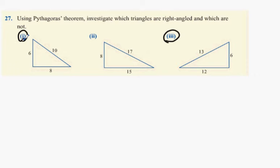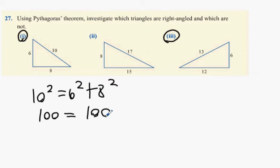Take 27, part 1. The longest side is 10 squared. It equals 6 squared plus 8 squared. 100 will actually end up to be equal to 100. Because it balances, it guarantees that this triangle is right-angled.